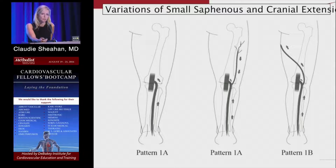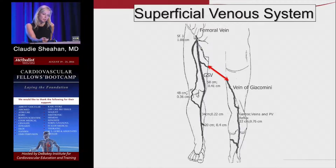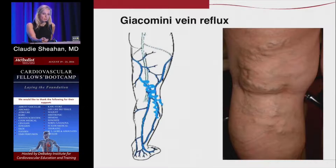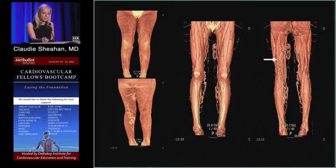The Giacomini vein is a not-uncommon source of reflux in patients. The cranial extension of the small saphenous vein — it's no longer called 'short,' it's the small saphenous — wraps around the medial thigh to join the GSV at any location in its proximal segment. A patient with reflux in the Giacomini vein may have varicosities in the posterior thigh or posterior calf, or you can see curly varicosities extending and wrapping all the way around to the anterior thigh. That's typical of Giacomini vein reflux.